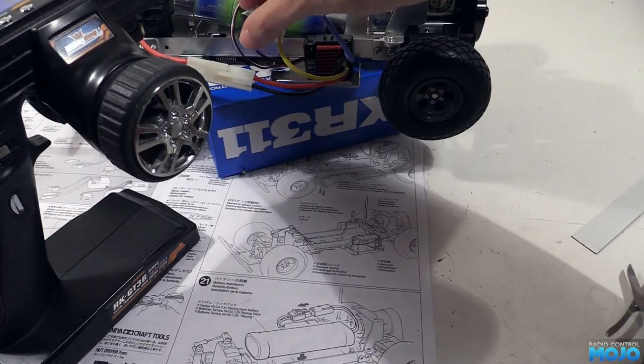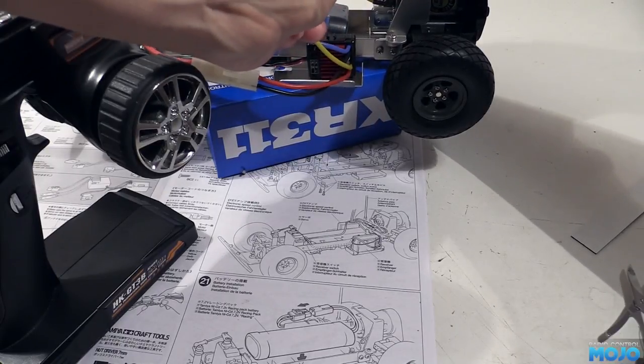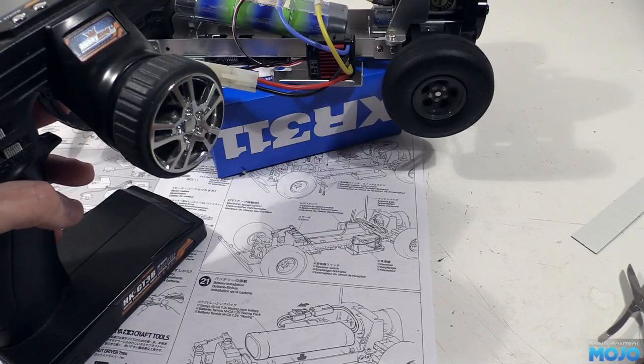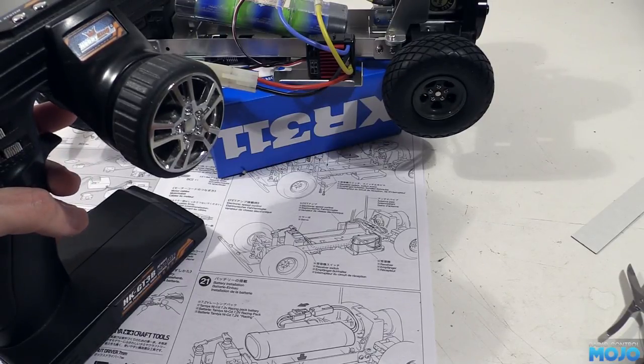But the motor's running backwards. That's just a case of swapping the motor wires. A good example of the wire colours not really telling you anything useful. It's usually down to luck whether they match up for your particular setup.